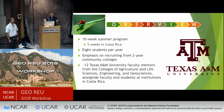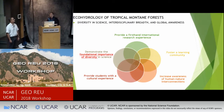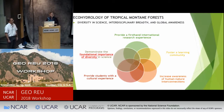A little quickly about my program: five of the weeks are in Costa Rica, we only have eight total students, and our emphasis is to recruit from two-year community colleges. We have a variety of interdisciplinary mentors from multiple colleges at Texas A&M as well as faculty and students at institutions in Costa Rica. Our themes include providing a firsthand international experience, fostering a learning community, increasing awareness of human-nature interconnections, and demonstrating the foundational importance of diversity in science.